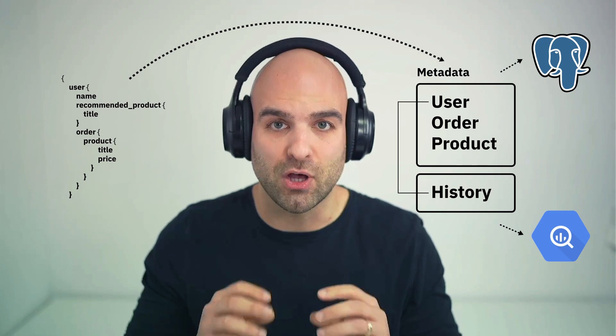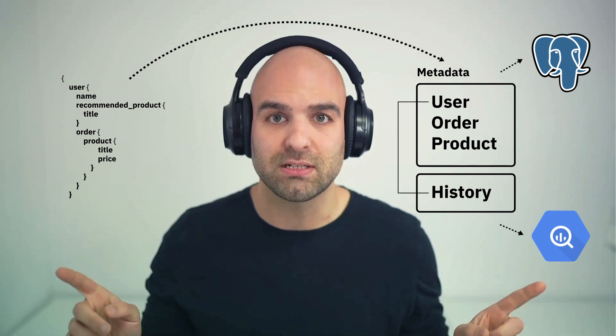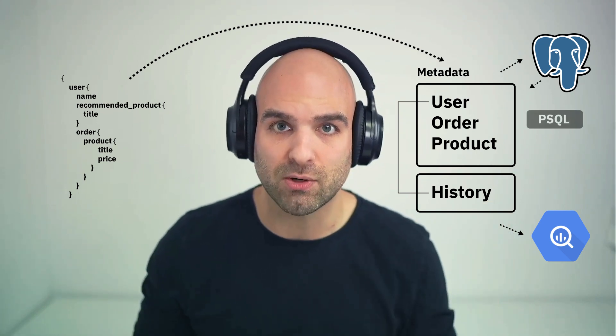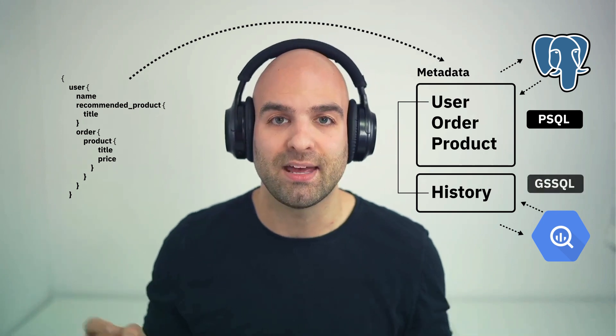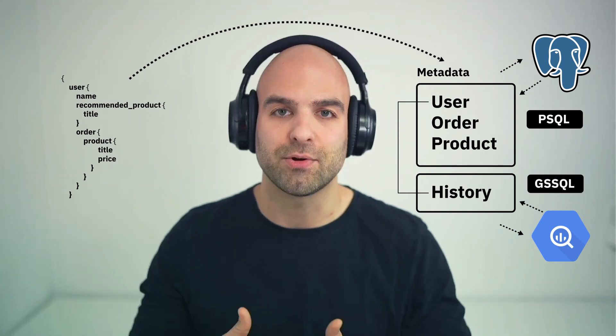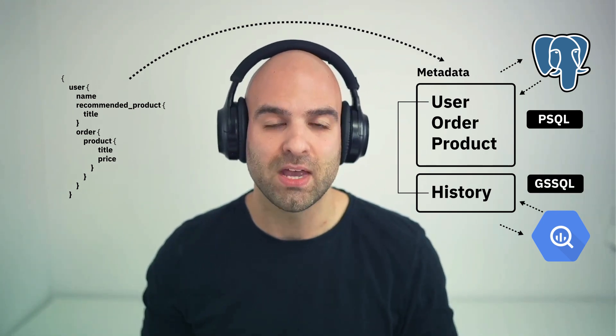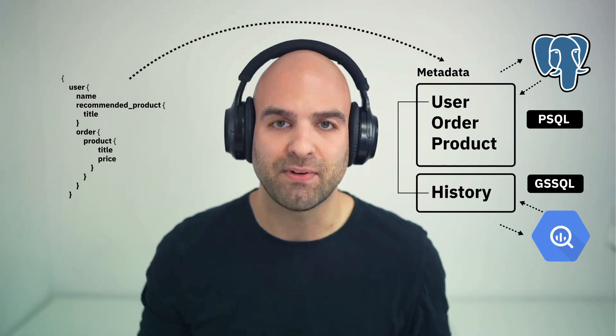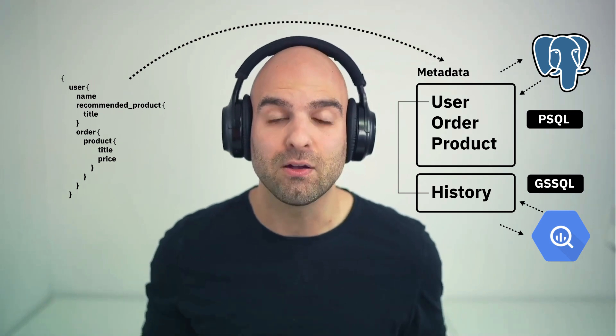That's where metadata comes in. I can define how these connect as well as how I connect to them, and then when I write a query — in this case GraphQL — to my system, it'll actually resolve that data to the different systems, however you speak Postgres or however you speak BigQuery, and then federate the data sources together and return it back to my user. That's what the metadata does: it provides a declarative approach to defining what we refer to as the data layer.